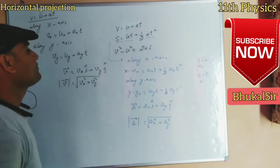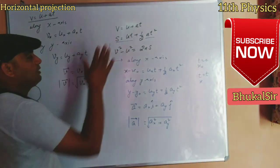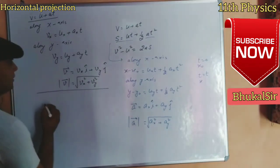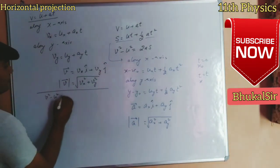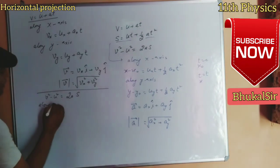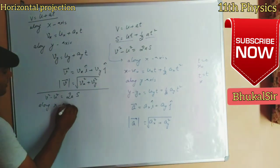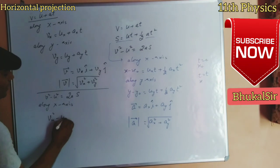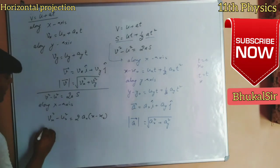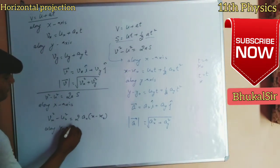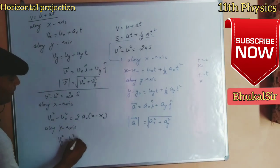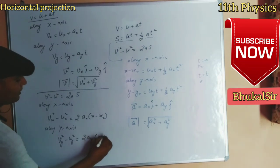I hope this concept is clear. Similarly, the third equation V² − U² = 2AS can also be resolved along axes. Along the x-axis: Vx² − Ux² = 2·Ax·(x − x₀). Along the y-axis: Vy² − Uy² = 2·Ay·(y − y₀). Dear students, please take a screenshot or note these equations.